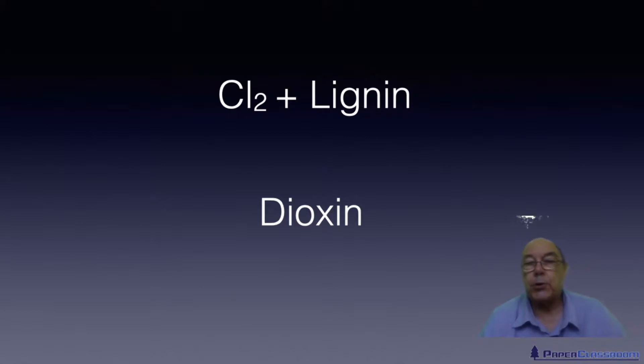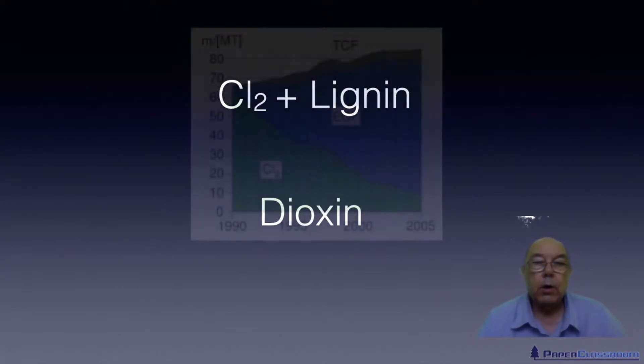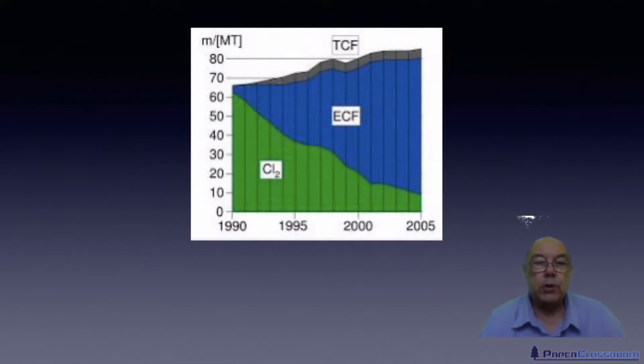And people got so good at analyzing for this, they could analyze down to parts per billion. So people don't want dioxin anywhere. It's so nasty a molecule in causing cancer. And so, what we've done now is adopted a strategy of trying to remove chlorine gas from our bleaching systems. Now, it's only the element chlorine that causes the problem.